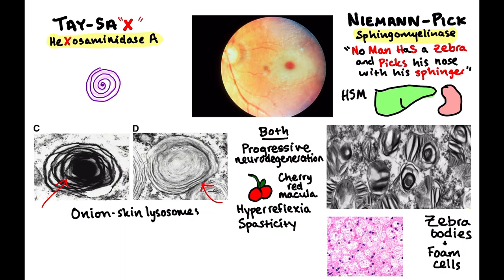Niemann-Pick, on the other hand, has zebra bodies under electron microscopy, and foam cells under light microscopy — just a collection of sphingomyelins in lysosomes. A helpful mnemonic: 'No man has a zebra and picks his nose with his sphinger' — No Man for Niemann, HS for hepatosplenomegaly, zebra for zebra bodies, and sphinger for sphingomyelinase.